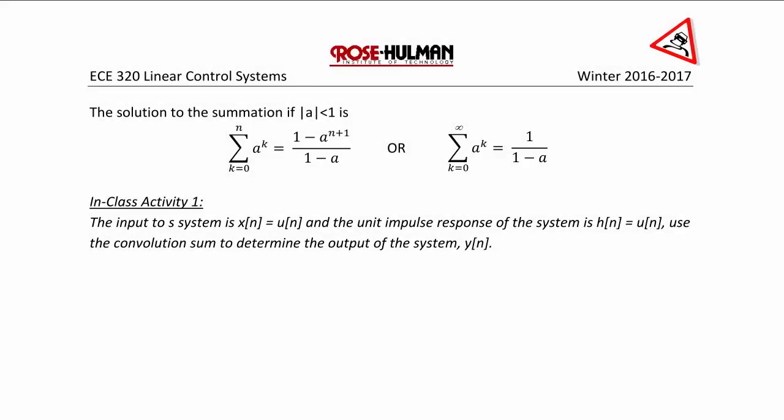One useful math fact needed for convolution sums: if the absolute value of a is less than 1, the summation from k equals 0 to n of a to the k equals 1 minus a to the n plus 1, all over 1 minus a. And if n approaches infinity, the summation from k equals 0 to infinity of a to the k equals 1 over 1 minus a.